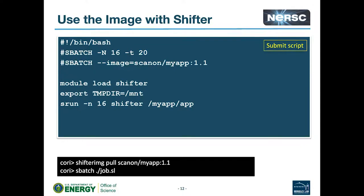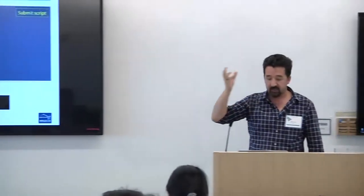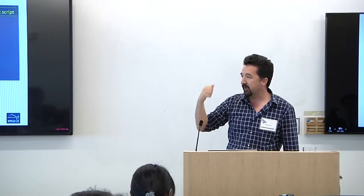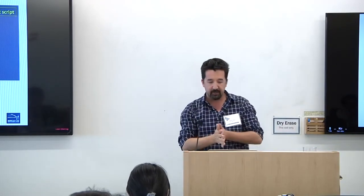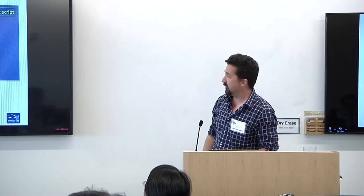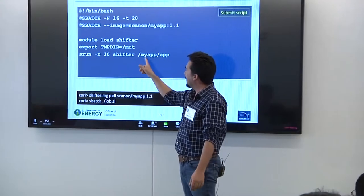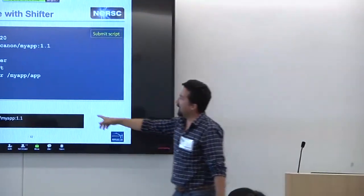How do you use the image on Cori? First, since the image is up in the registry, you have to pull it down with the shifter image pull command — not Docker pull. Then you submit a batch job with the image specified in the header. The image lands on the compute node before the job starts, so you don't pay for the pull during job startup. The only thing you need in your job script that's different from a regular application is the shifter prefix before your command — that specifies the path inside the container to run.